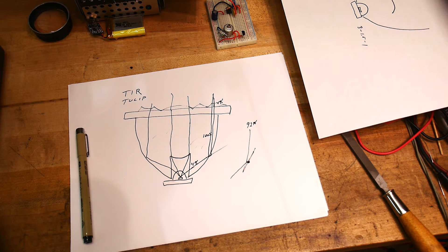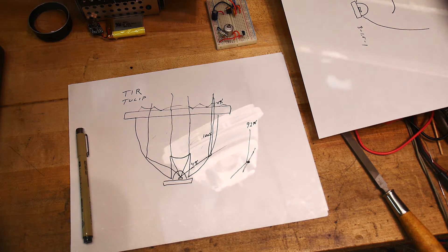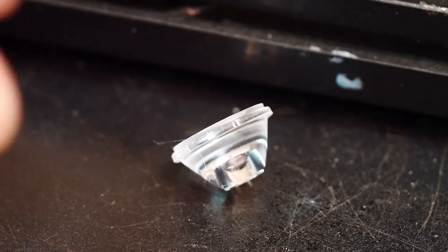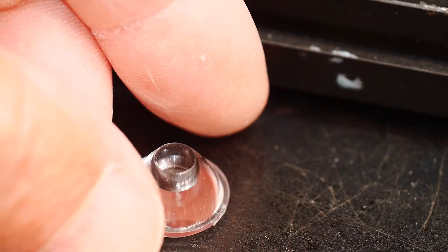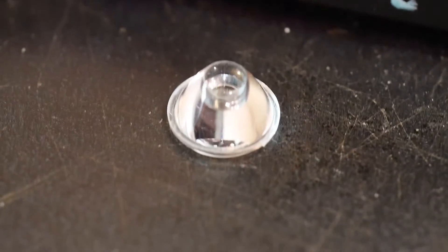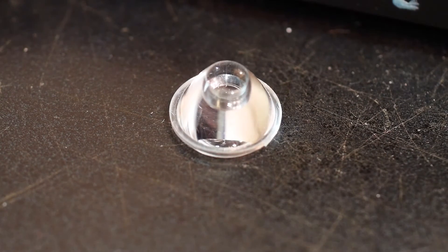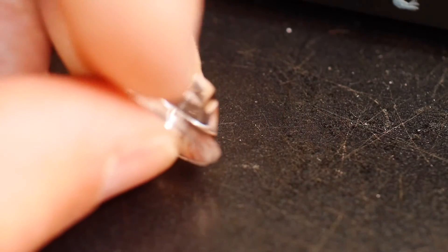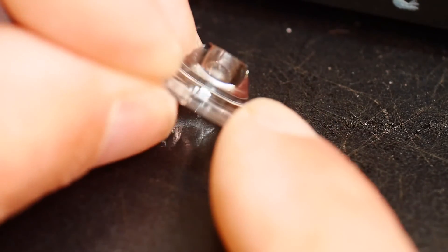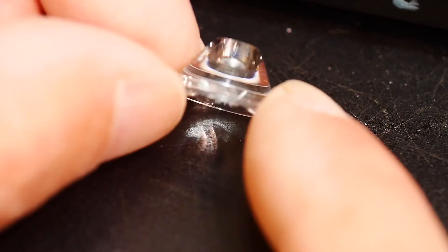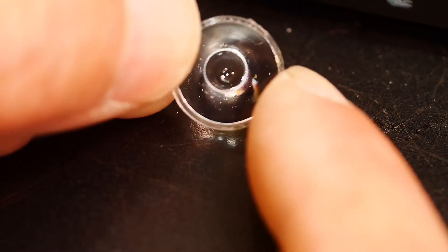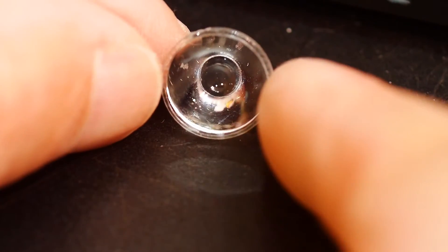So here's the tulip lens. It's made out of a clear polycarbonate, and that's the end that the LED will go in—that little divot there on the end. And there's a little tiny flange on the outer diameter to help you hold this thing without getting in the way of the light. The exit face is flat on this one.